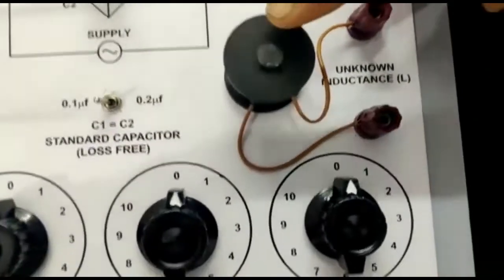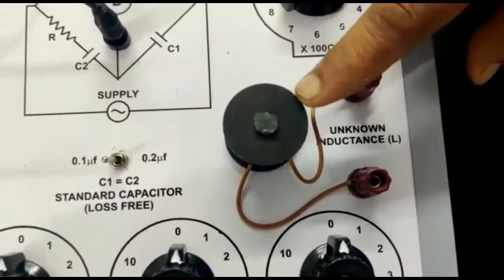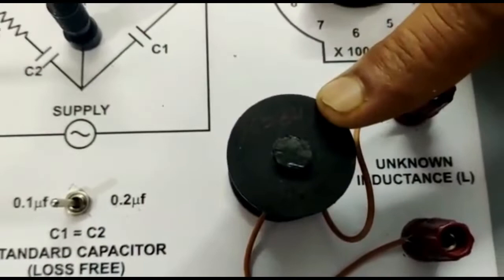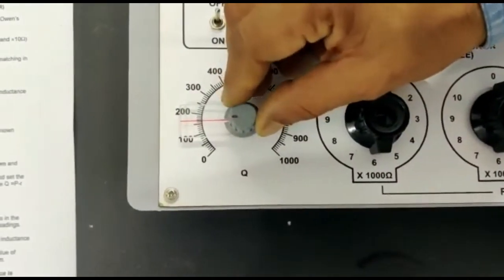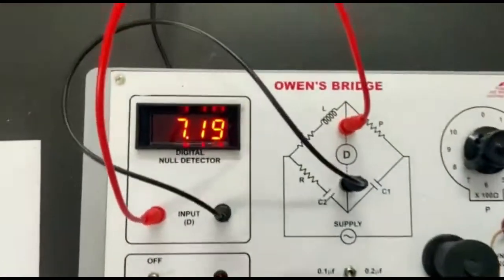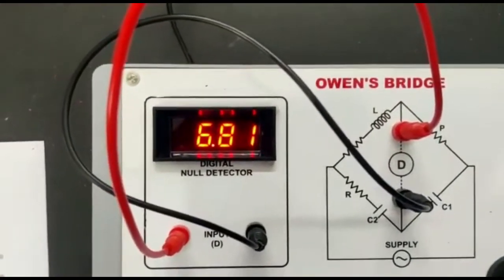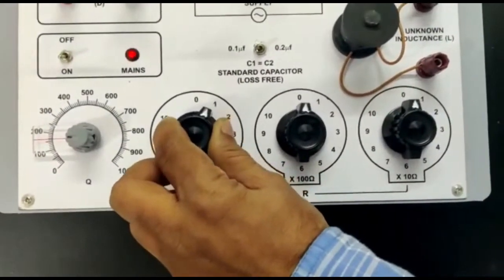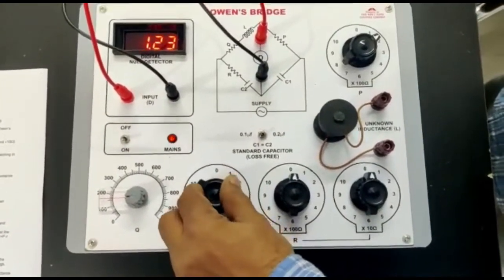Now set the Q dial by P minus R, where P is 200 and R is the internal resistance of the inductance coil which is 64 Ohms. Now switch on the instrument. There will be some reading at the digital detector. By using this dial, try to find the balance point minimum reading.